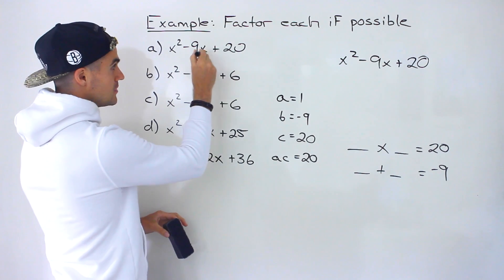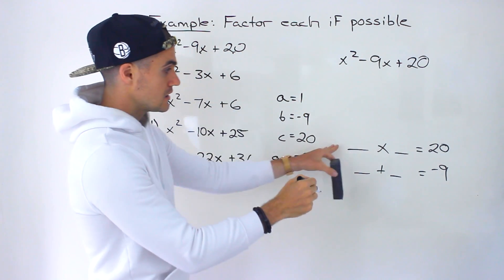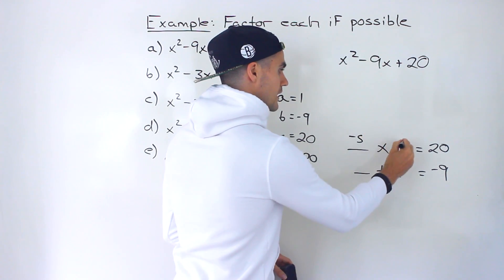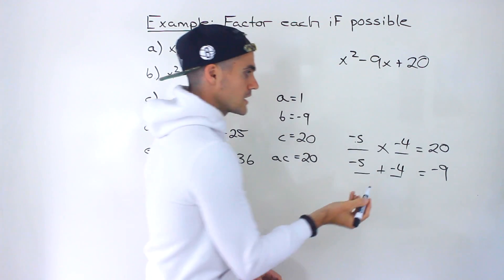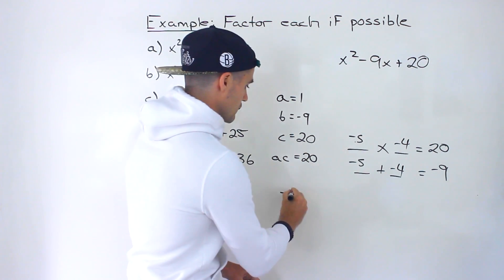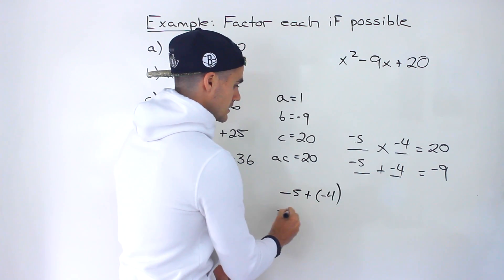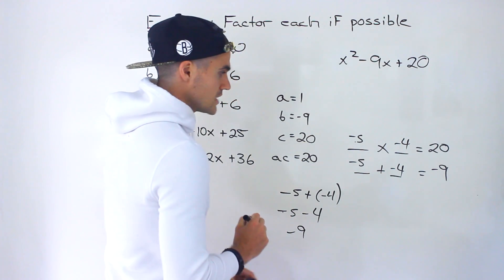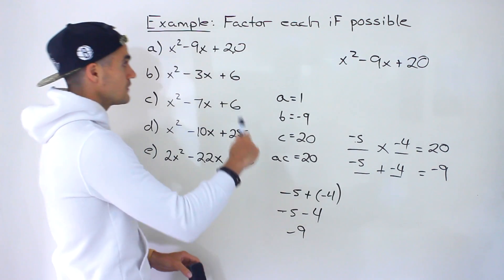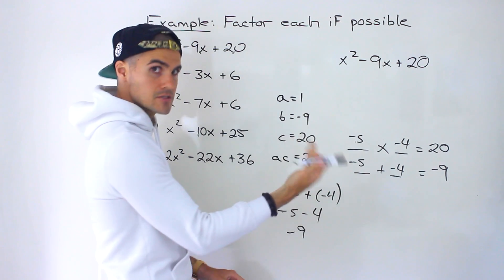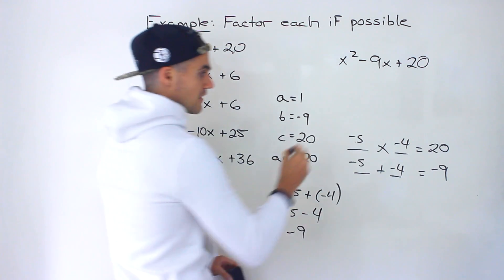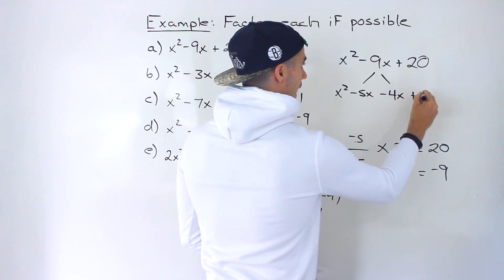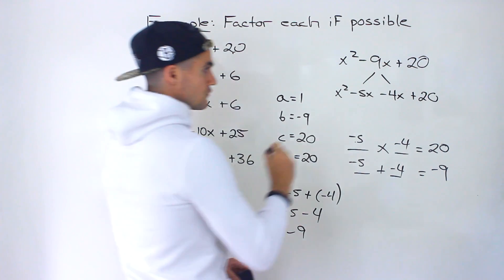Whenever you have a negative B value and a positive C value doing decomposition, these two numbers you're finding are always going to be two negative numbers. If you try out the different factors, it's going to be negative 5 and negative 4. Negative 5 times negative 4 gives us positive 20. Negative 5 plus negative 4 is like negative 5 minus 4, which gives us negative 9 — which is what we're looking for. So the two numbers are both negative.